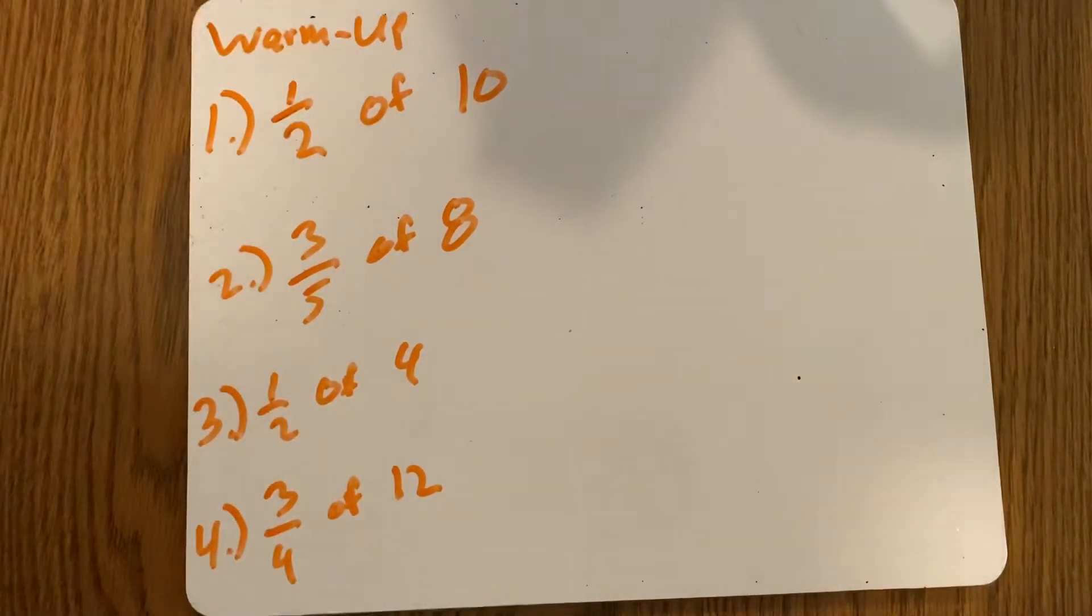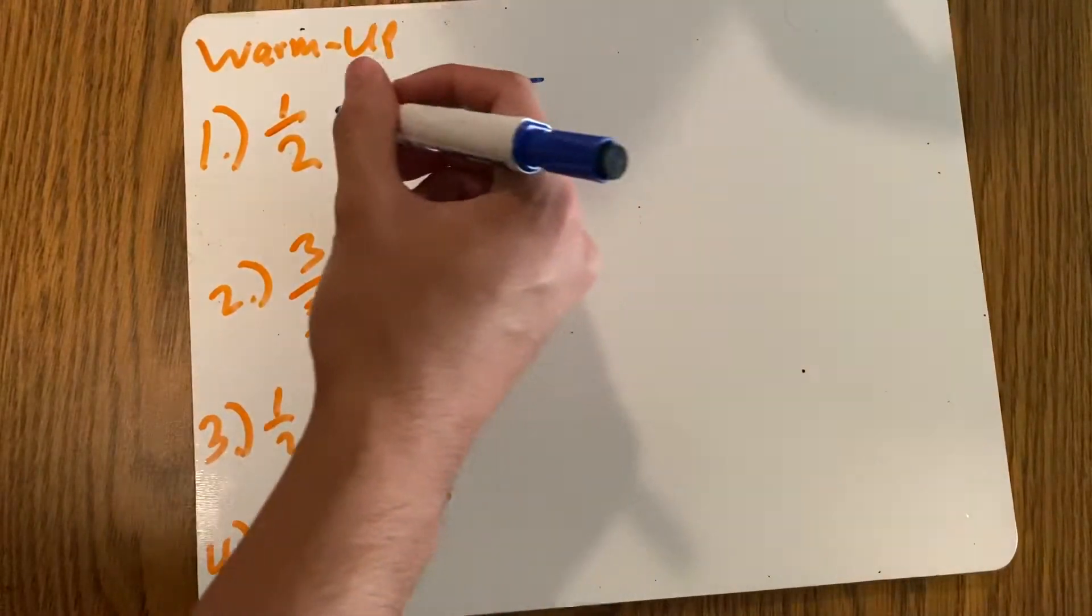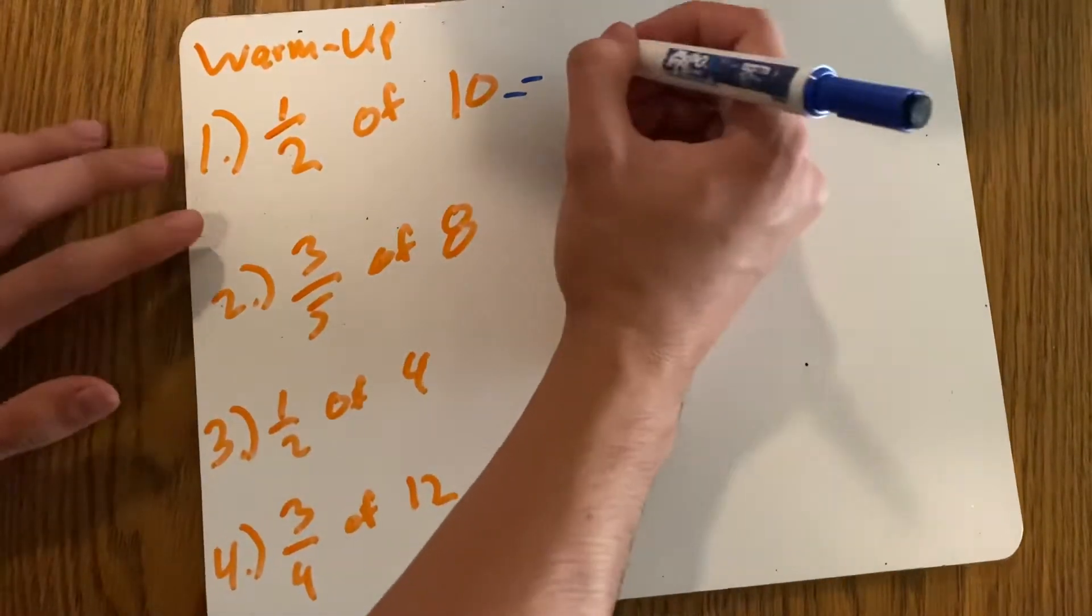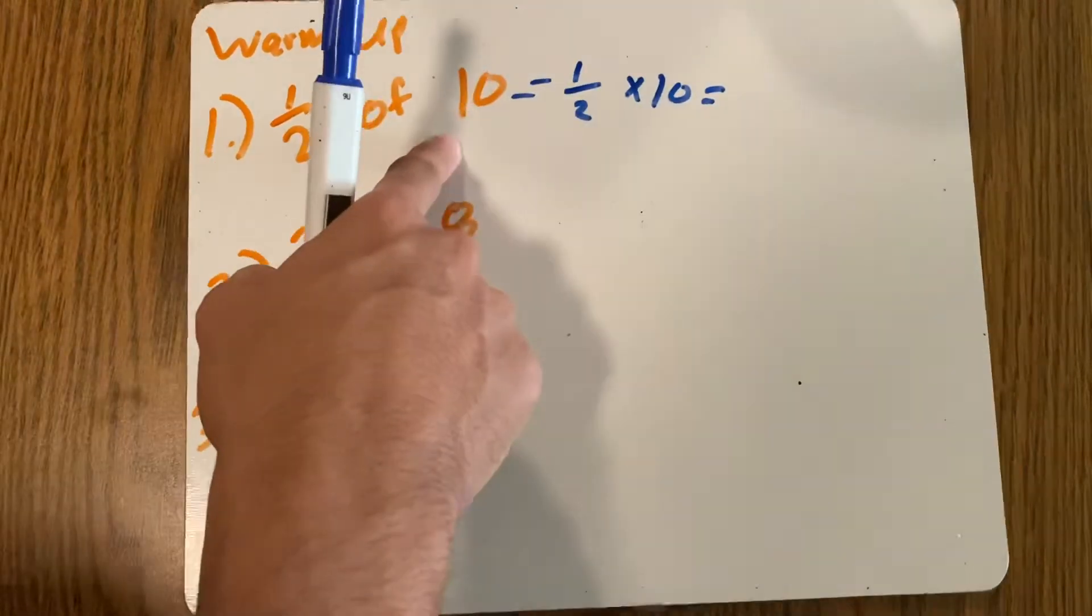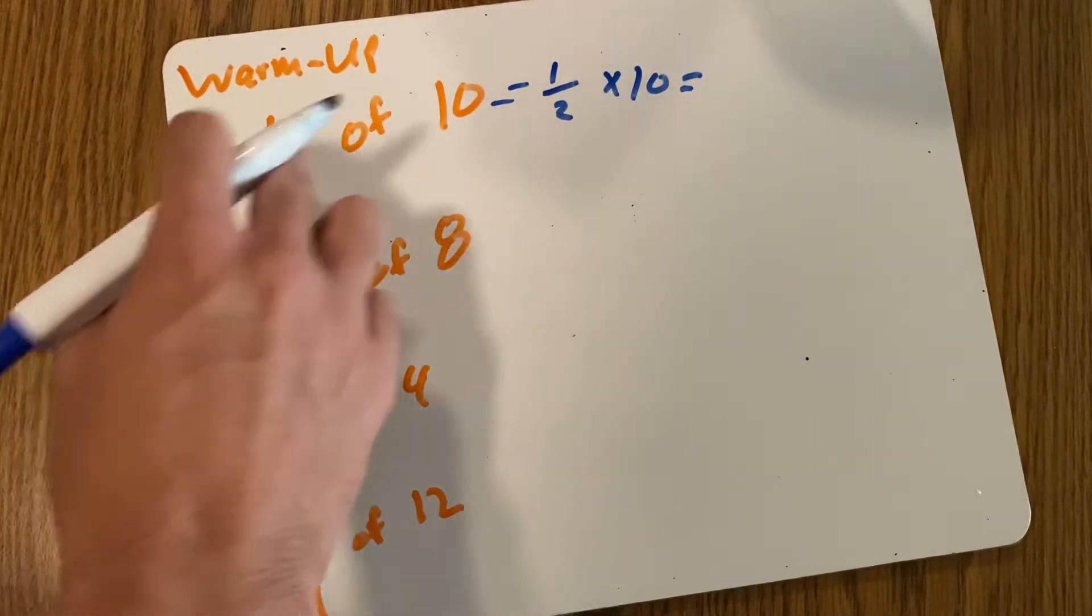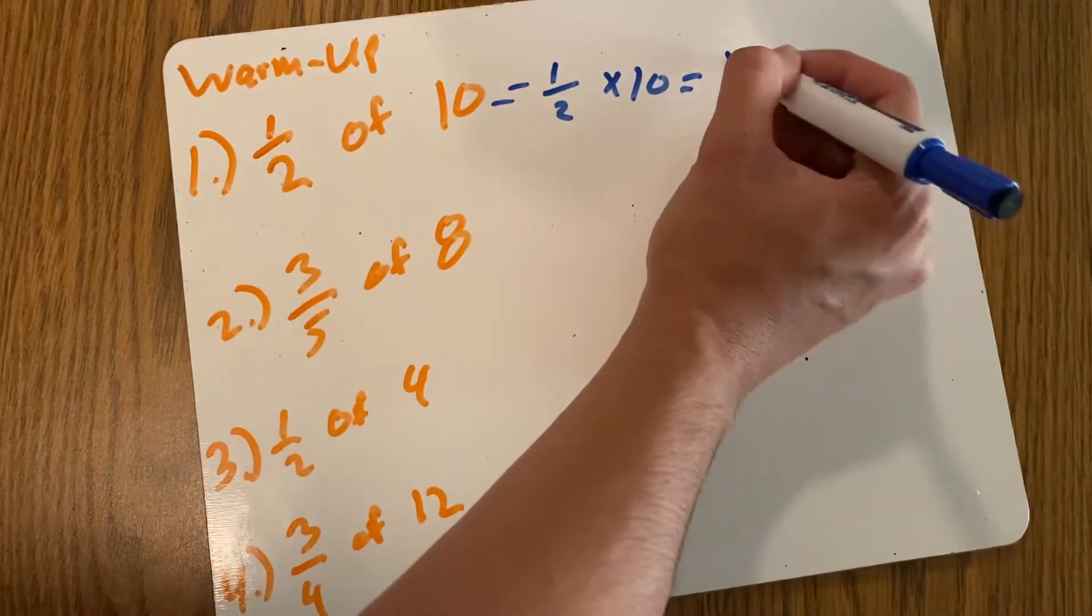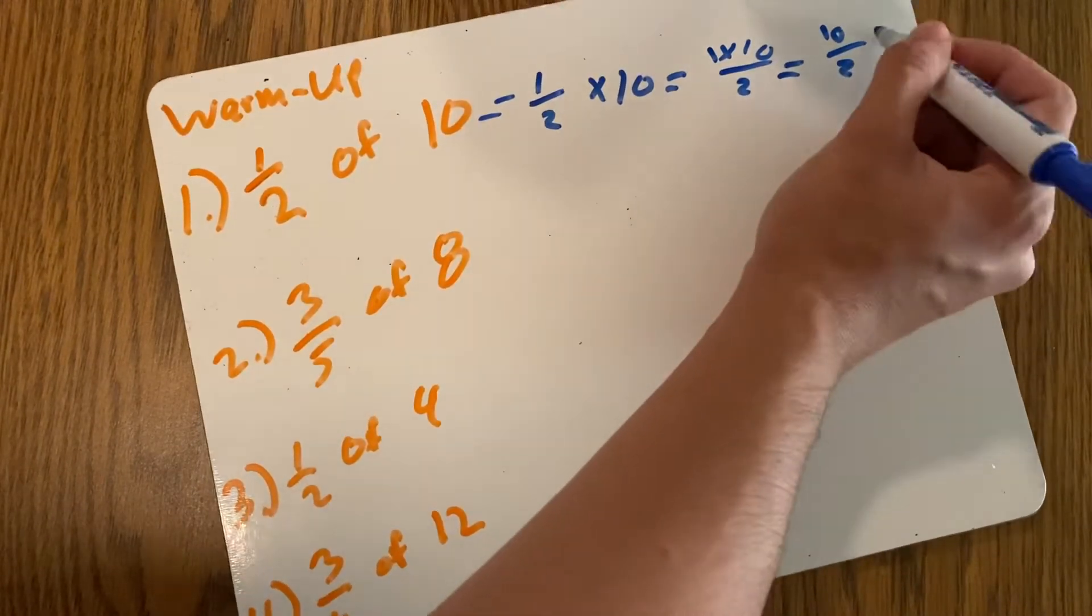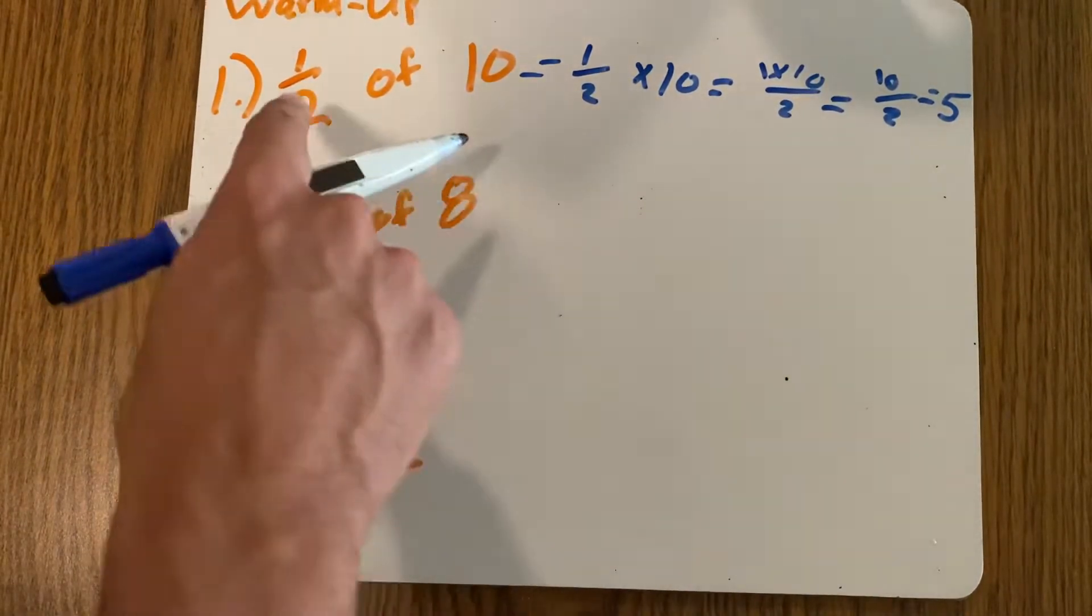All right, so remember when we had these types of problems, one half of 10, that means that you have one half times 10, right? It's like you have 10 pieces of candy and your friend grabbed half of it. What's half of 10? Well, I multiply one half times 10. One times 10, that's 10 over 2. 10 over 2 is 5, and that makes sense, right? Because half of 10 is 5.